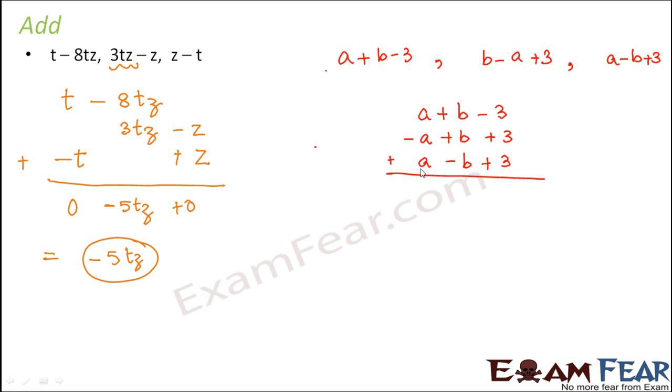So what happens? When you add all of these, you have plus a plus a, which makes it 2a minus a. That means it becomes a. So basically, 1 plus a and 1 minus a gets cancelled out. So you are left with a.